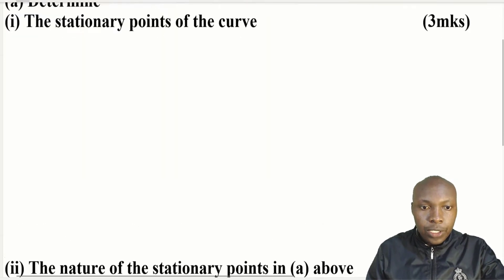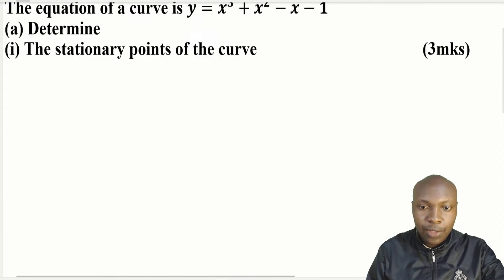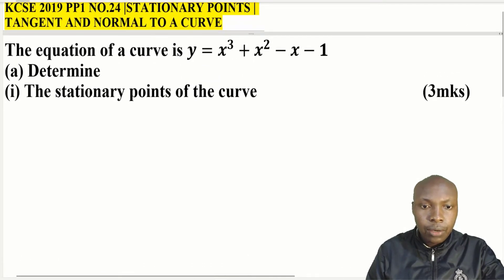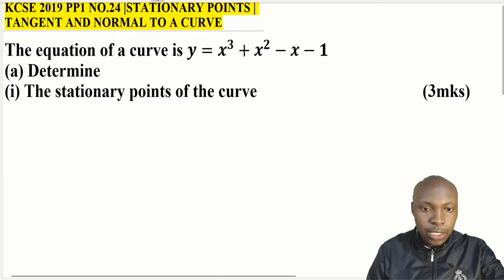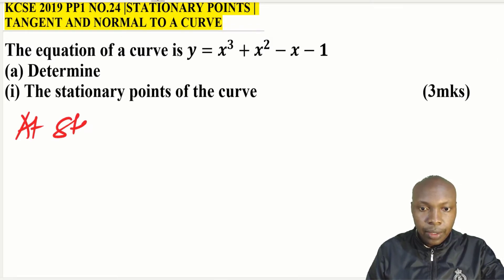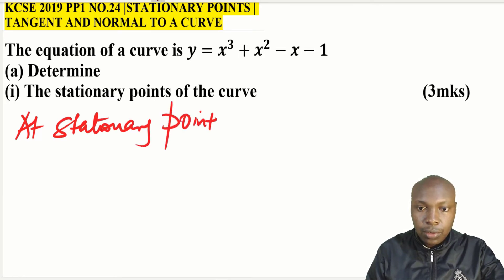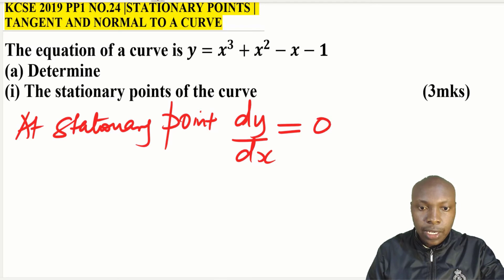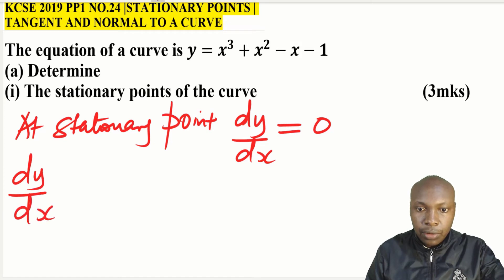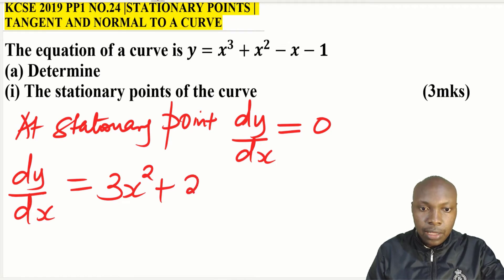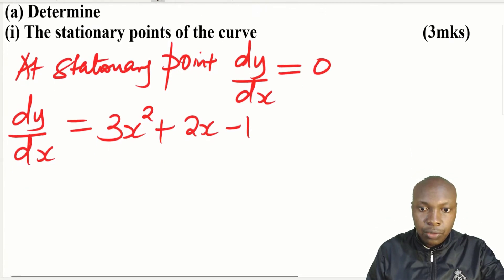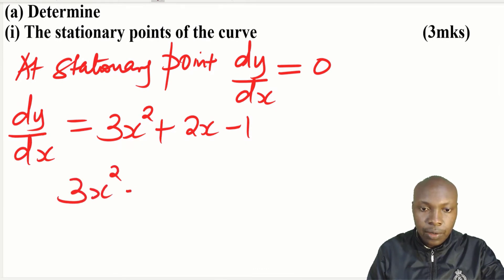Let's begin with the stationary points. The most important thing to note is that at a stationary point of the curve, the gradient should be equal to zero — that is, dy/dx = 0. We differentiate the equation of the curve and get 3x² + 2x - 1. Since at a stationary point the gradient should be zero, we equate this to zero.